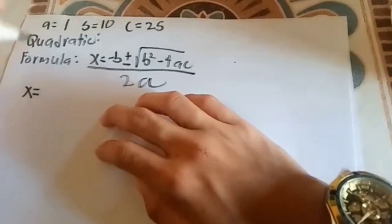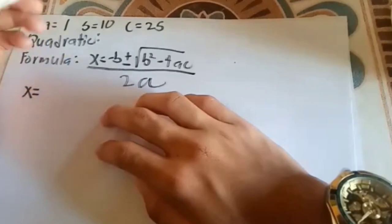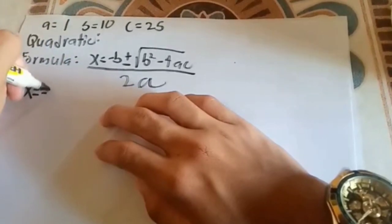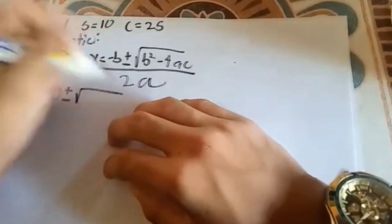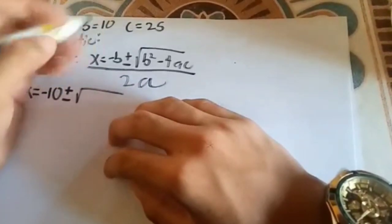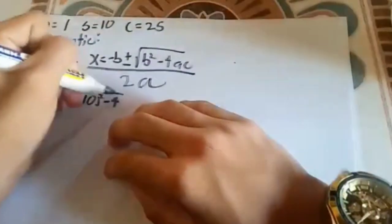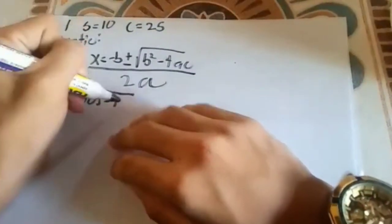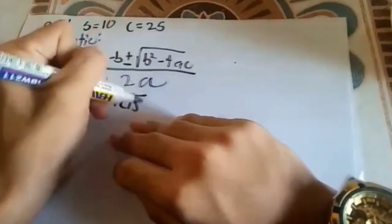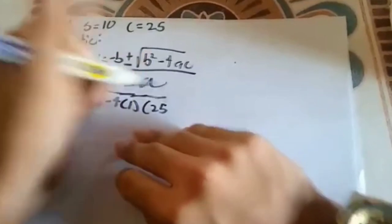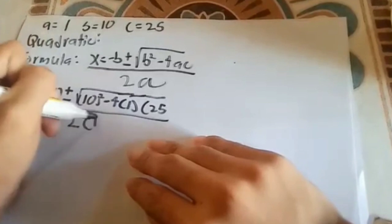X equals negative B plus or minus radical B squared minus 4AC, all divided by 2A. The value of B is 10, so we write negative 10, plus or minus radical — the value of B is 10, so 10 squared — minus 4 times A which is 1, times C which is 25, all divided by 2 times A which is 1.